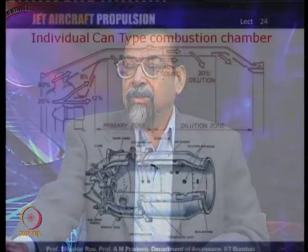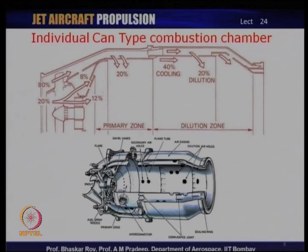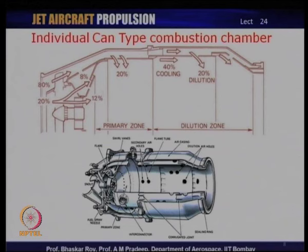Let us take a look at some of the combustion chambers we should be familiar with. The first type that came into being in a typical gas turbine engine is referred to as a can-type combustion chamber, in which the entire flow from the compressor is split into a number of cans arranged in an annular fashion around the engine shaft. Quite often you would have 5, 7, 9, or more cans, and the annulus air from the compressor is split among them. Each can is a combustion chamber by itself.